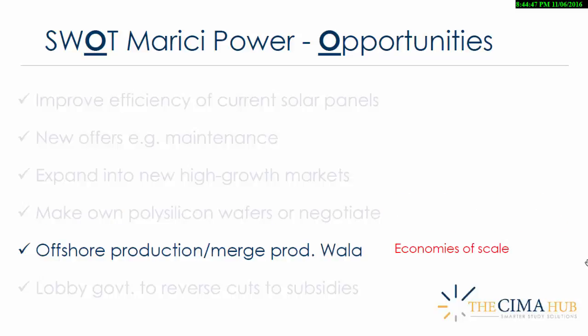Given that Marici is located in a wealthy country, in the capital city, with their production and materials storage there — would they not consider offshore production? Moving some of that production to lower-cost countries could reduce costs significantly. They could even consider merging their production with Walla, which might itself be considering this to achieve economies of scale and cost reductions.